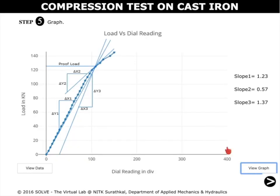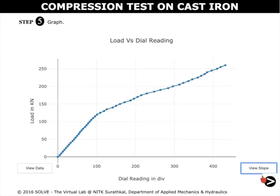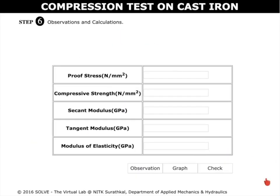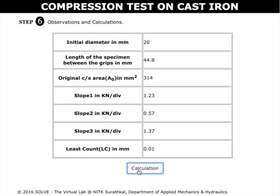To view the slope drawn, we can click on the view slope option. In order to look into the observations of this test, click on the observation tab.